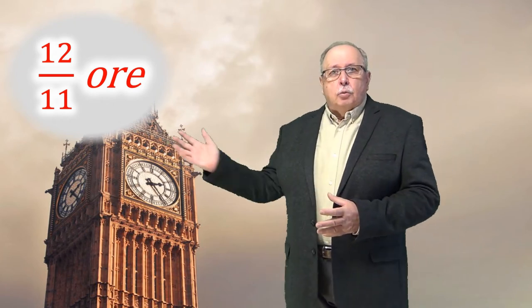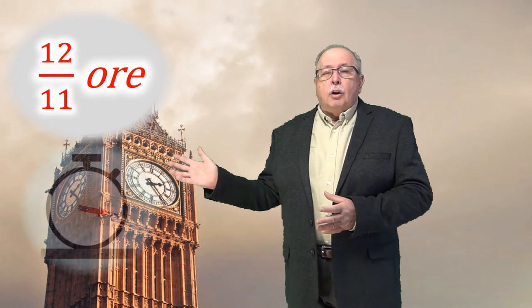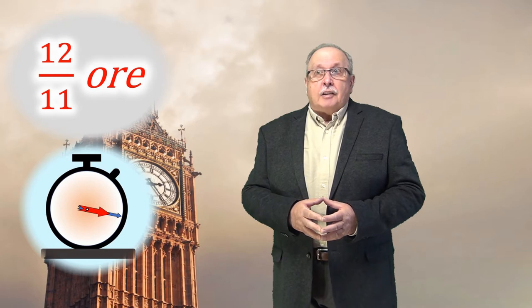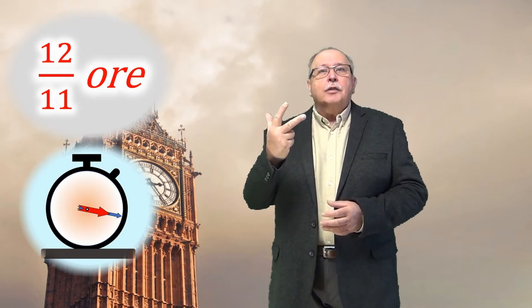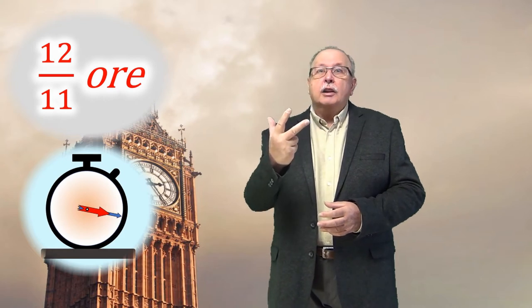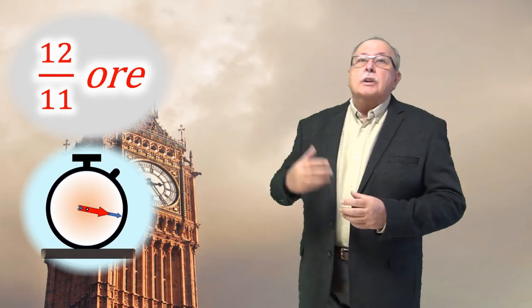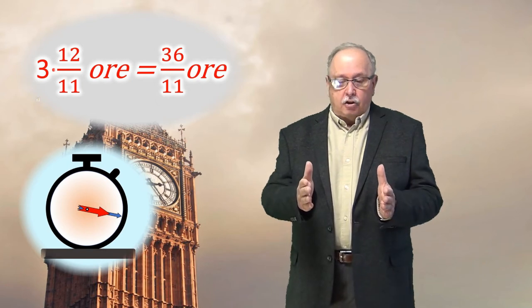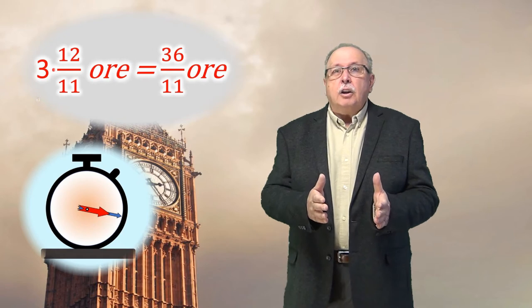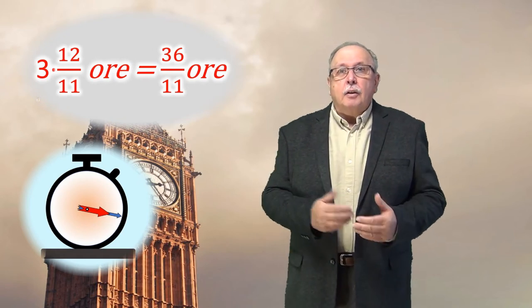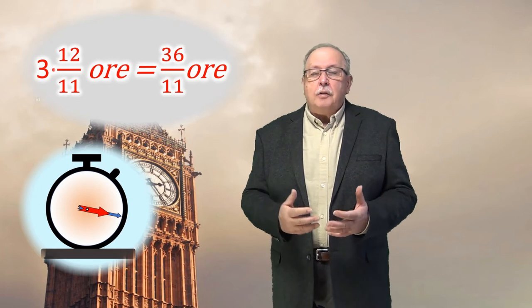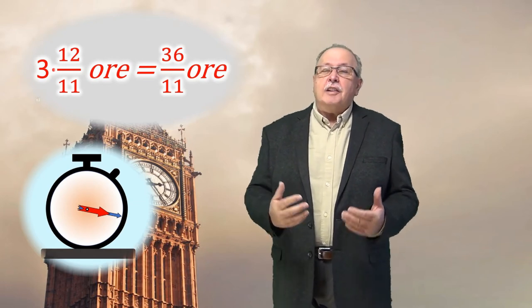Acum, cine este cât de cât familiarizat cu cadranul ceasului, știe că ora pe care o arată acest ceas este trei și ceva. Este după trei, dar nu este încă patru. Și asta înseamnă că este vorba despre a treia suprapunere după ora douăsprezece a limbilor ceasului. Asta înseamnă că timpul care a trecut de la ora douăsprezece până acum este de trei ori doisprezece supra unzprezece.